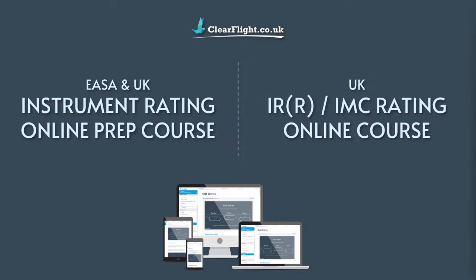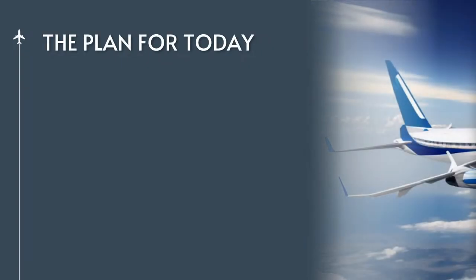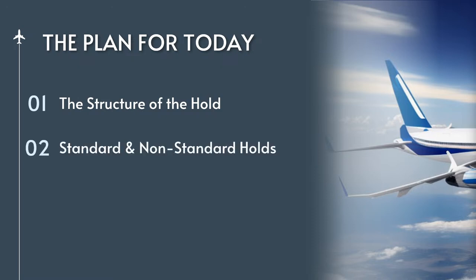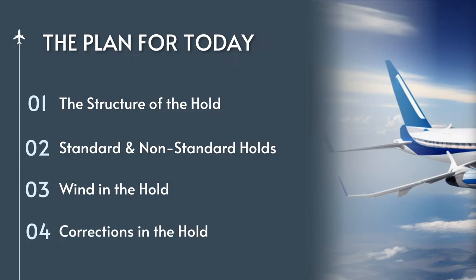Let's jump into our topic for tonight - holding patterns for the EASA and UK instrument rating. We'll start by talking about the general structure of the hold, covering both standard holds and non-standard holds. Then we'll talk about what we do about the wind in the hold - crosswinds, headwinds, tailwinds, how we correct for all of those. And lastly tonight, we'll talk about if we do get out of position in the hold, how do we recognize that and how do we correct for it?